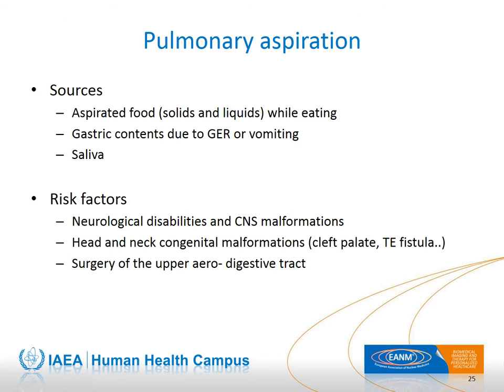The next topic is scintigraphic techniques to detect pulmonary aspiration. There are three sources for pulmonary aspiration: aspiration of food — solids or liquids — that may occur during feeding; aspiration of gastric contents due to gastroesophageal reflux or vomiting; and aspiration of salivary oral secretions. Foreign body aspiration is another source but will not be discussed here.